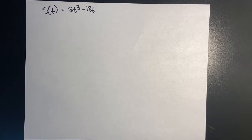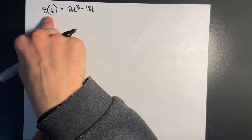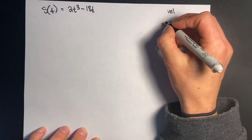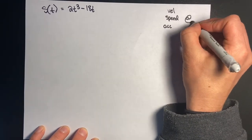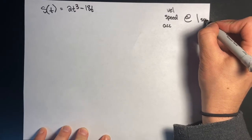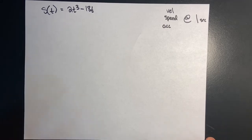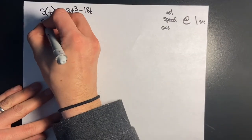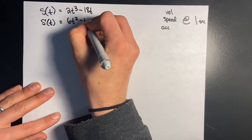I have the need — the need for speed. So that equation gives us the position of a particle as it travels through a curve. I need to find the velocity, the speed, and the acceleration, all at one second. Velocity is found by taking the derivative, so s'(t) equals 6t² minus 18.